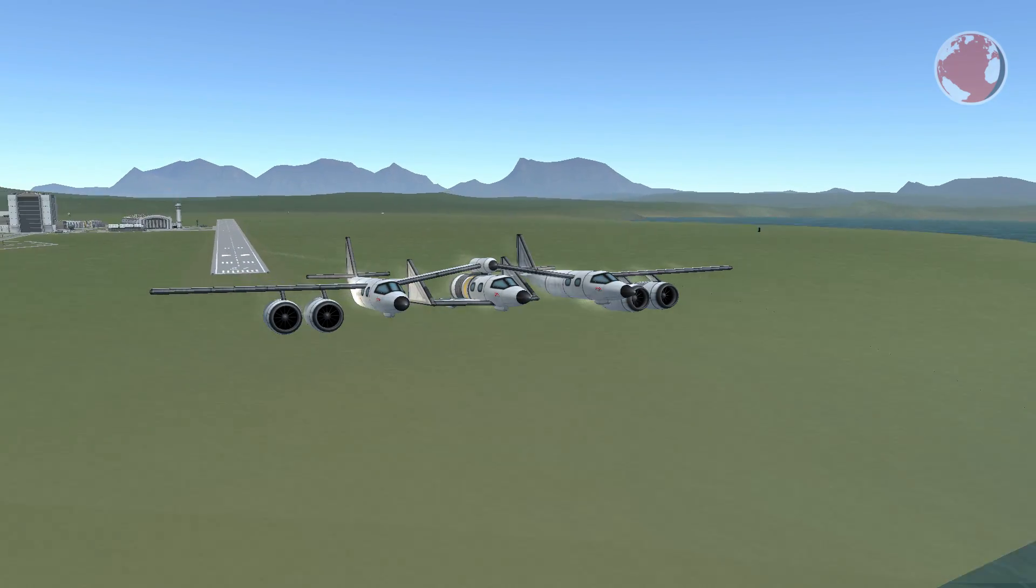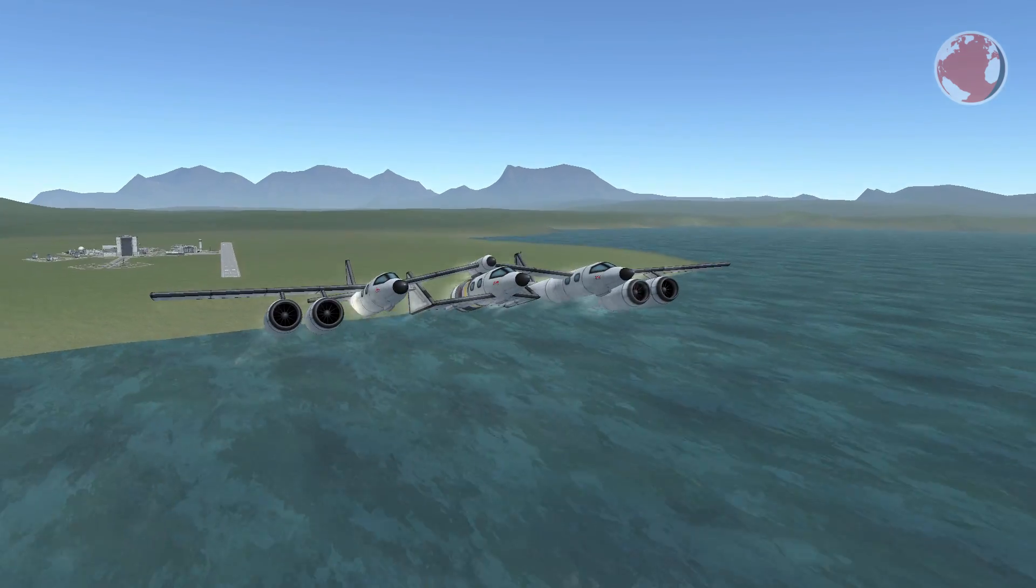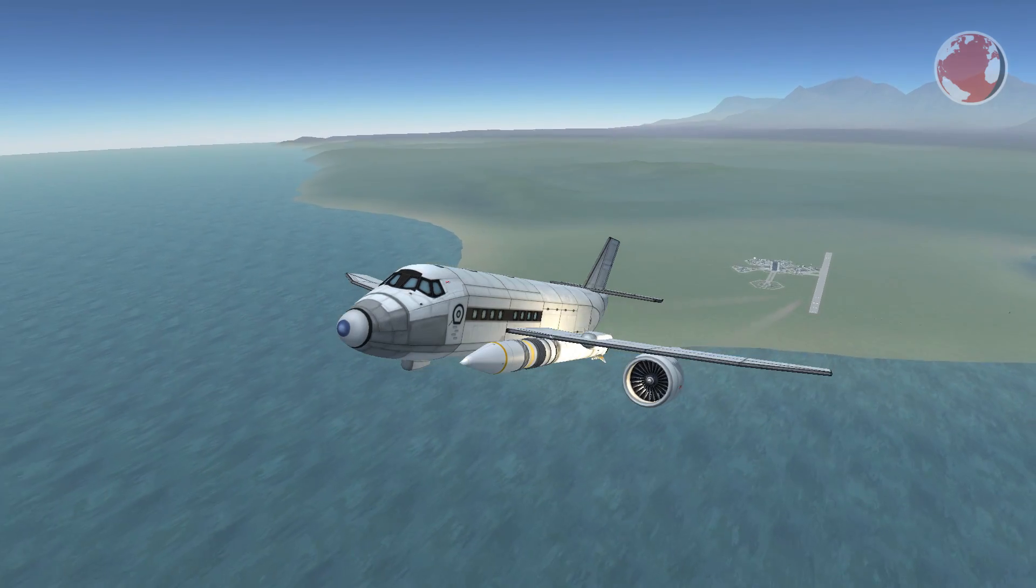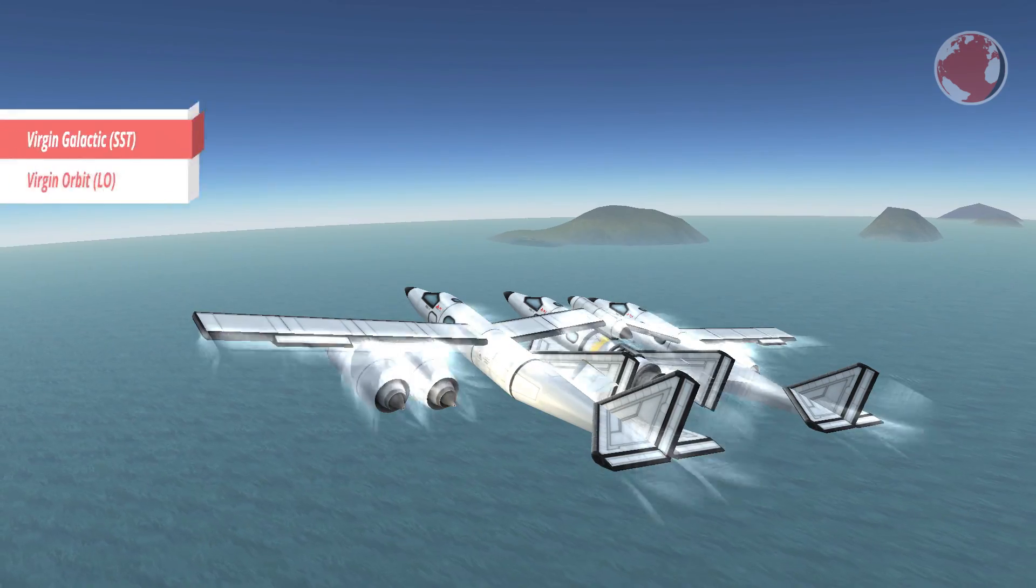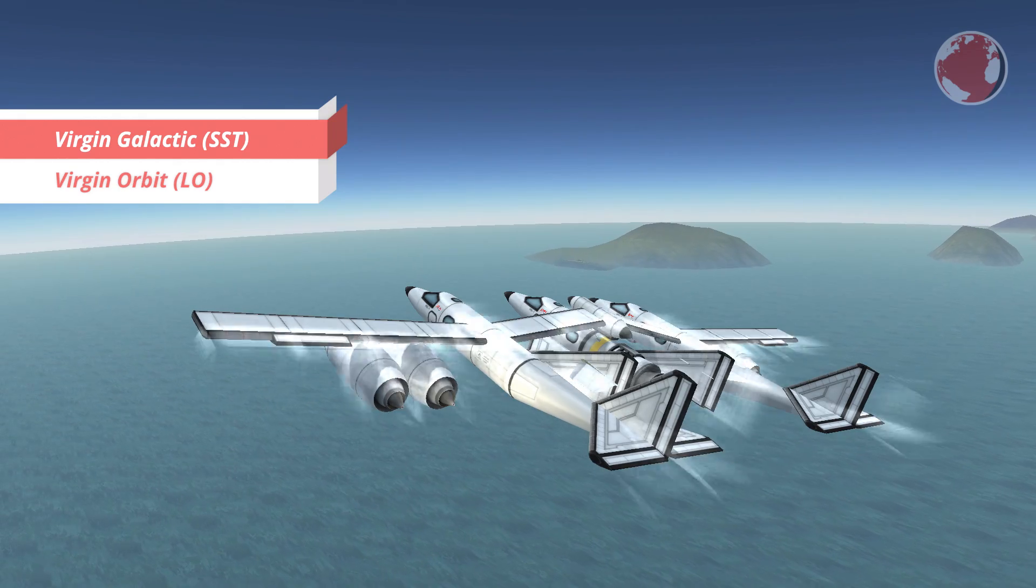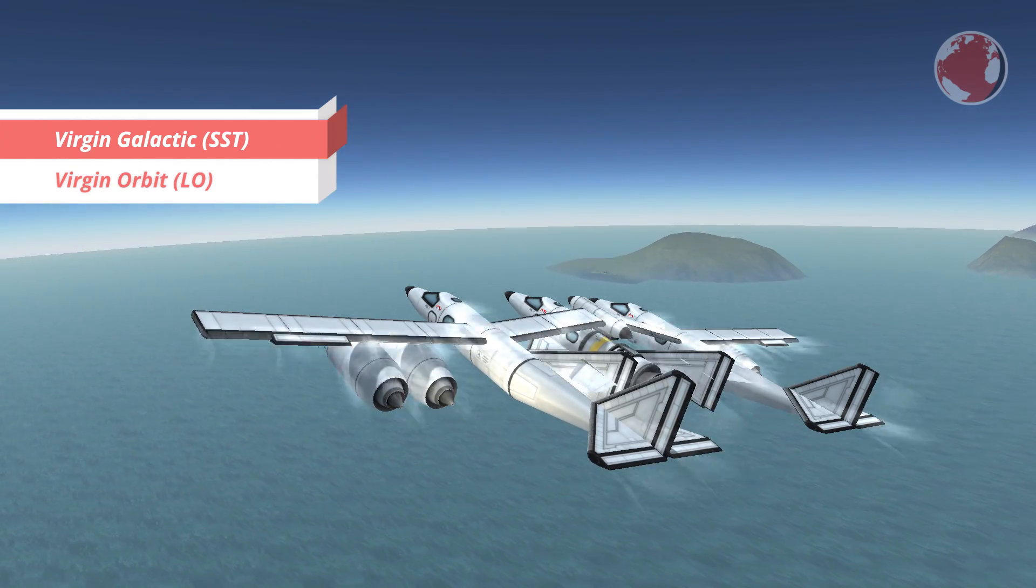But before I jump into that, let me first mention some news for Virgin Galactic. The company which is known for Spaceship 2 and Launcher 1 is being split into two entities. Virgin Galactic will remain the part shooting units into space, while Launcher 1 will from now on fly under the new company called Virgin Orbit.